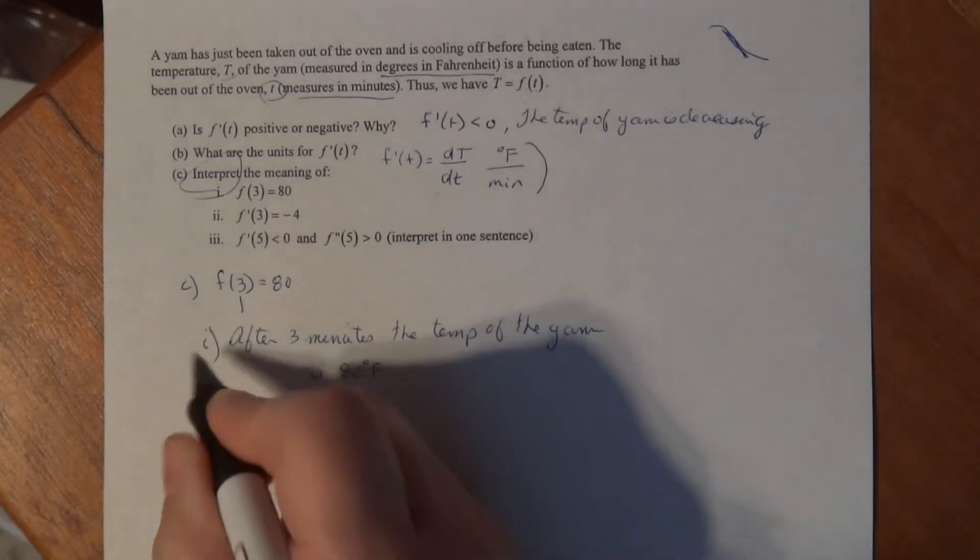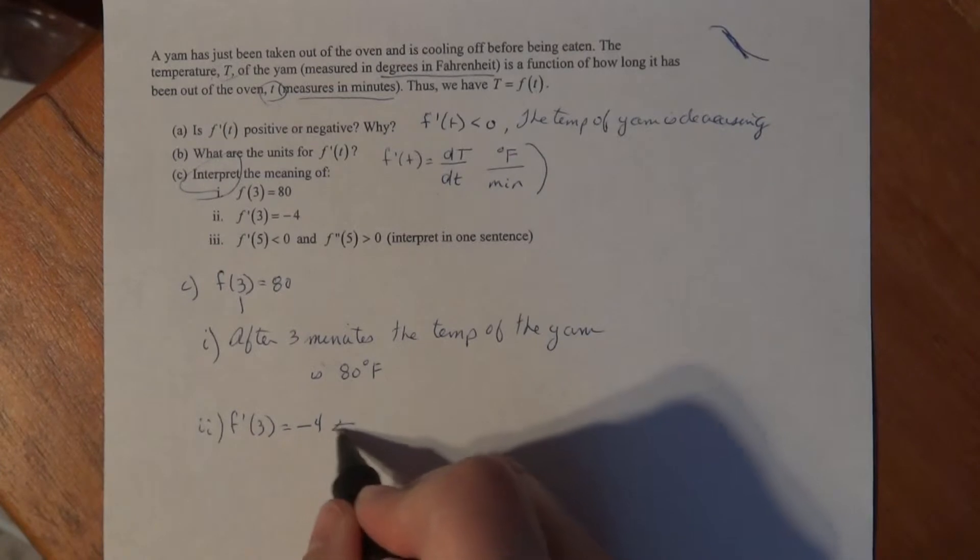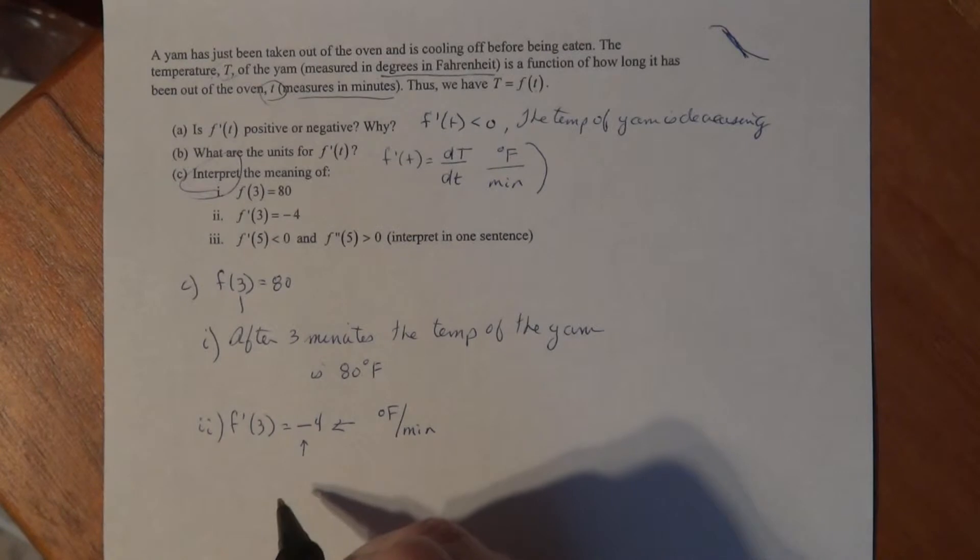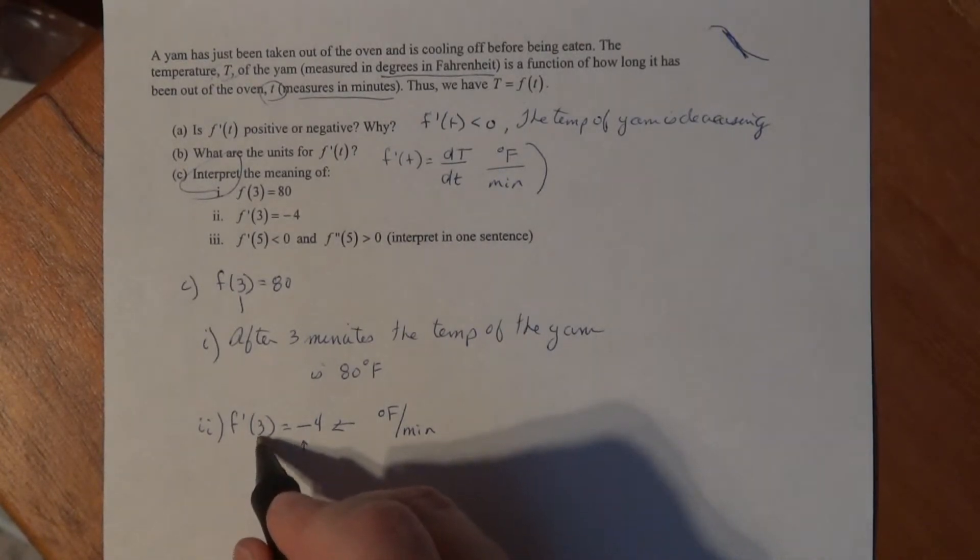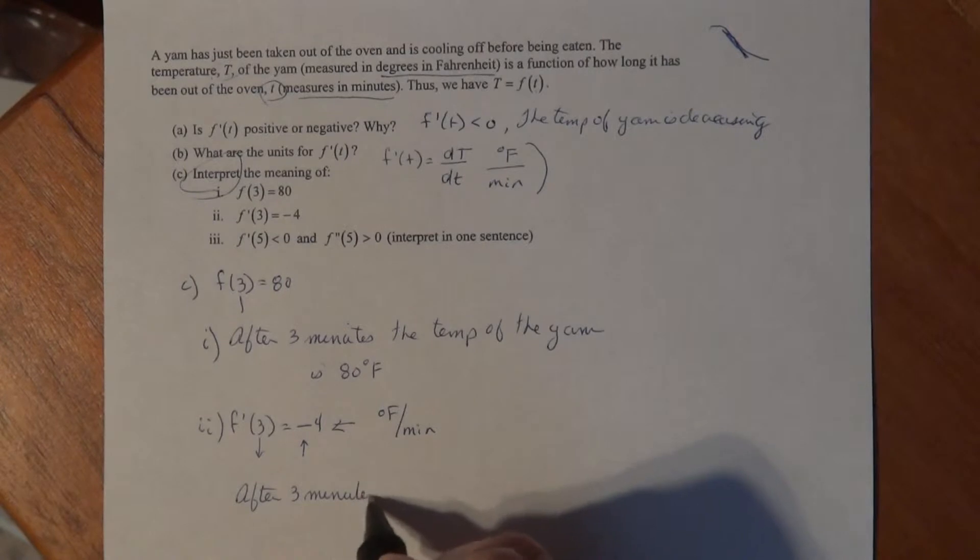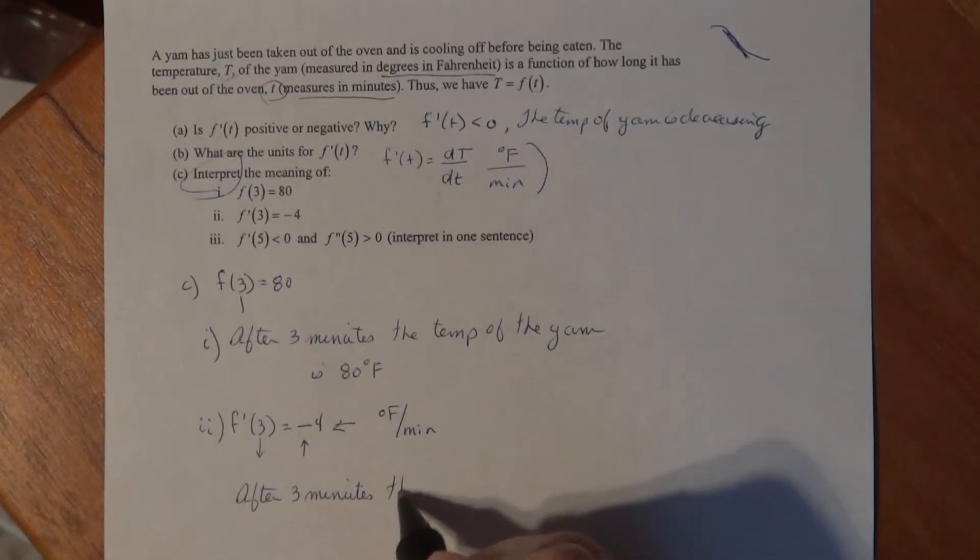We know from part B the unit of measure is degrees Fahrenheit per minute. The negative implies that the temperature is decreasing. This is my input, where I'm starting. After three minutes, the temperature,